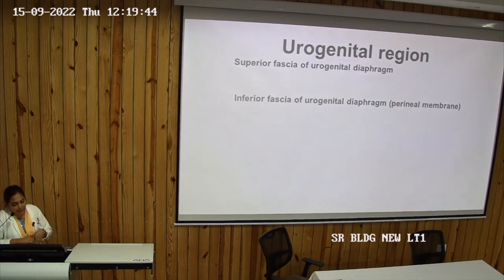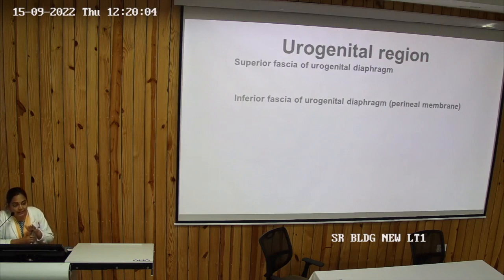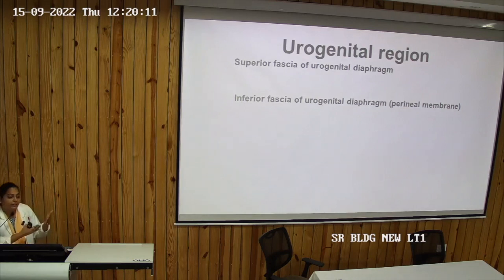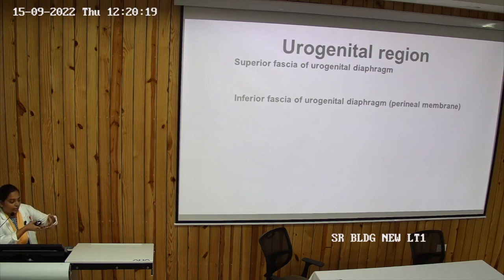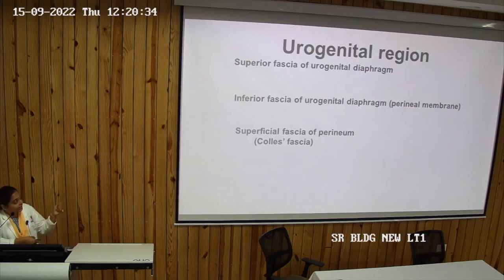This region is present below the pelvic diaphragm. Just below the pelvic diaphragm, the fascia of the pelvic diaphragm — known as endopelvic fascia — forms the superior fascia of the urogenital diaphragm. The inferior fascia of the urogenital diaphragm is the perineal membrane.